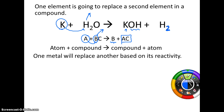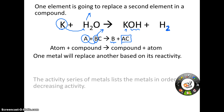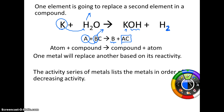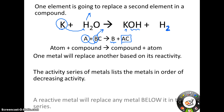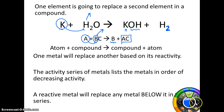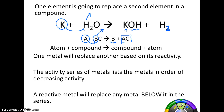In order for a single replacement reaction to happen, one metal is going to have to replace another based on its reactivity. We're going to use the activity series of metals to do this. These metals are listed in order of decreasing activity, so the ones at the bottom are not very active. A reactive metal can replace any metal below it in the series — they can move down, but they cannot move up.